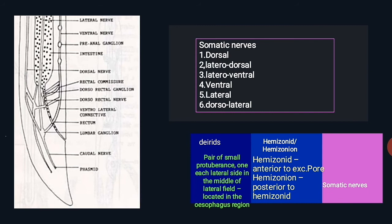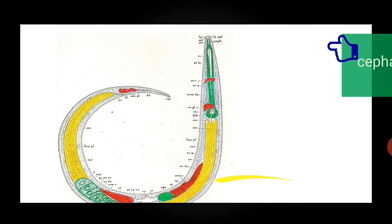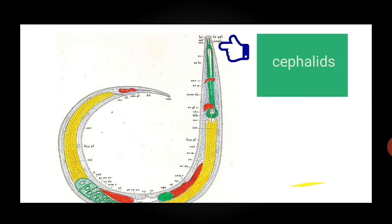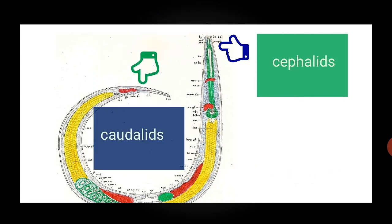Next, cephalids and caudalids: the cephalid is a complete ring around the body anteriorly, just behind the cephalic region, as the name indicates. The caudalid is a small nerve commissure in the caudal region, situated slightly posterior to the hemizonid.